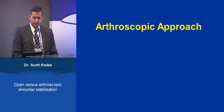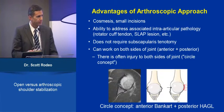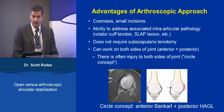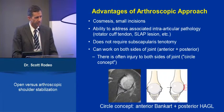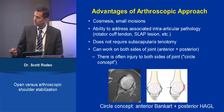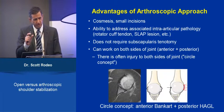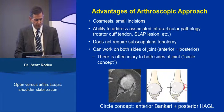What about the arthroscopic approach — when might we favor it? Certainly there are smaller incisions and cosmesis may be an issue. The arthroscopic approach allows us to address other intra-articular pathologies such as rotator cuff or superior labral lesions. It does not require a subscapularis tenotomy. The arthroscopic approach also allows us to work on both sides of the joint — important because there is often injury to both sides, the so-called circle concept, with anterior instability often involving some posterior capsule injury as well.